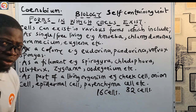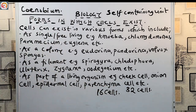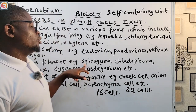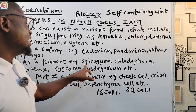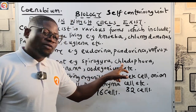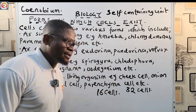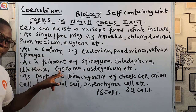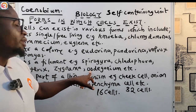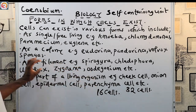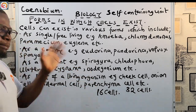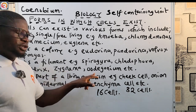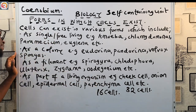Filamentous organisms exist as a filament. Examples include: Spirogyra, Cladophora, Ulothrix, Zygnema, and Oedogonium. Please take note of all these examples as they are commonly tested.